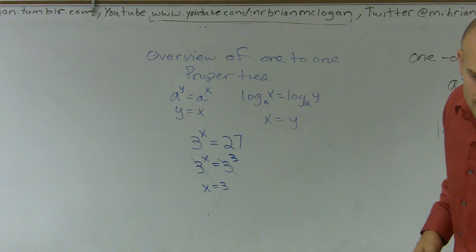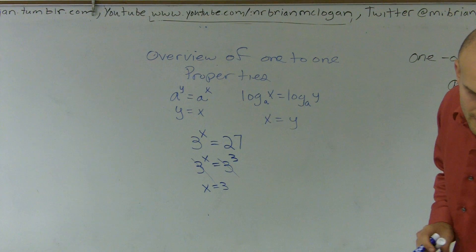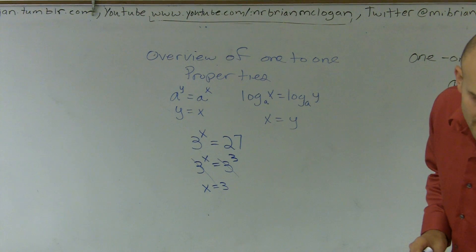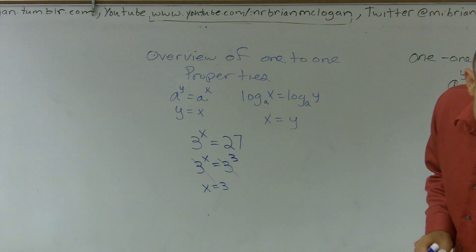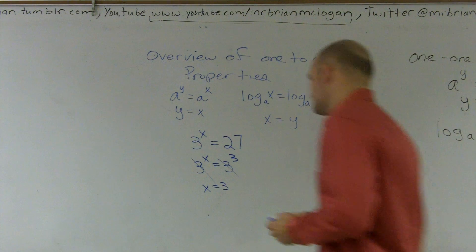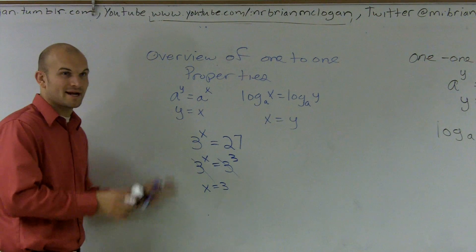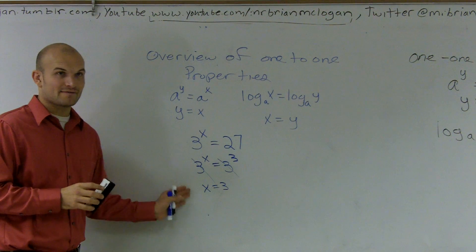However, by using one-to-one properties, what I want you to see is we could also solve this problem by doing this. Because three cubed is equal to 27. Does everybody see how I rewrote that? So you need to understand, because I'm going to give you some harder problems that you're going to have to solve for. So you're going to have to get the same base, you can cancel them out, and you get x equals three. Does that make sense?